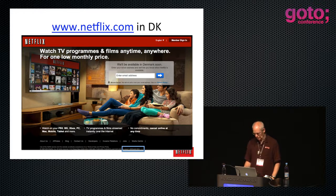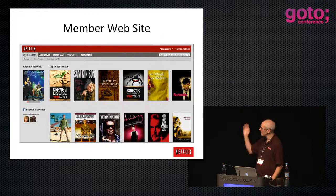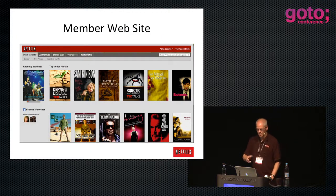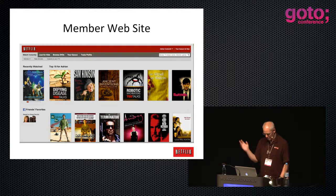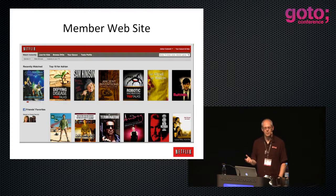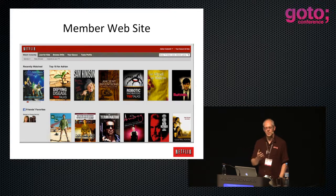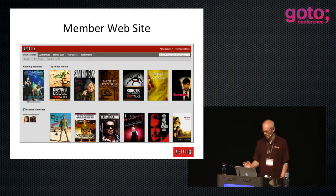When you are a member, you get something that looks like a whole lot of movies. We have Facebook integration so I can see stuff my friends watch, all the things I've been watching recently, and various bits and pieces. The member website is basically giving you hundreds of movies to choose from, trying to pick the ones that will be best for you rather than just an alphabetical list.